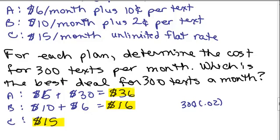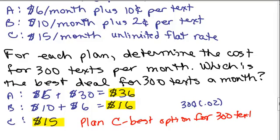So here would be the different amounts. Plan C is the best option. Now, obviously, if I go more than 300, Plan C is still going to be the best option because Plan A and B are still going to be going up in price.